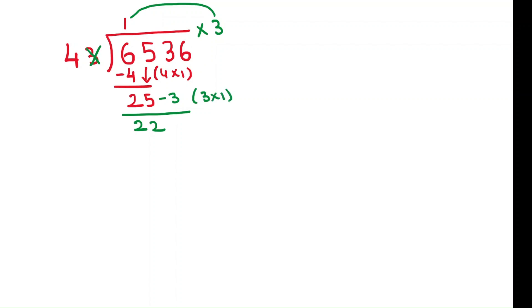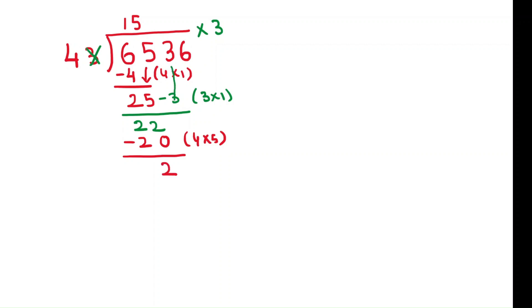Now you have to work with 4. 4 times 5 is 20. 22 minus 20 is 2. Now bring down the next number, which is 3. When bringing down, you work with the last digit of the divisor again — 3 times the last digit of the quotient. 3 times 5 is 15.